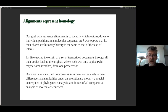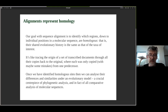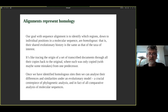Once we've identified those homologous sites — nucleotides or amino acids — we can analyze their differences and similarities under some kind of evolutionary model. That's a central part of phylogenetic analysis, and it's part of all comparative analysis with molecular sequences. We absolutely have to have homologous items — things with the same shared history — in order to compare them properly.